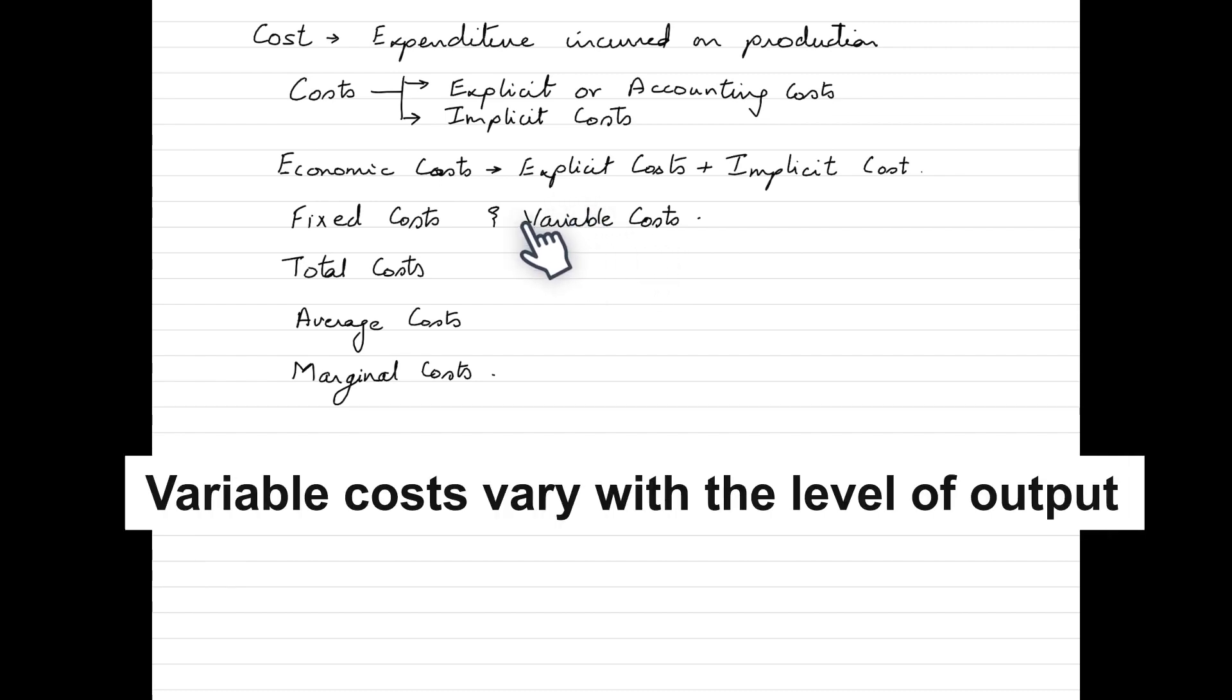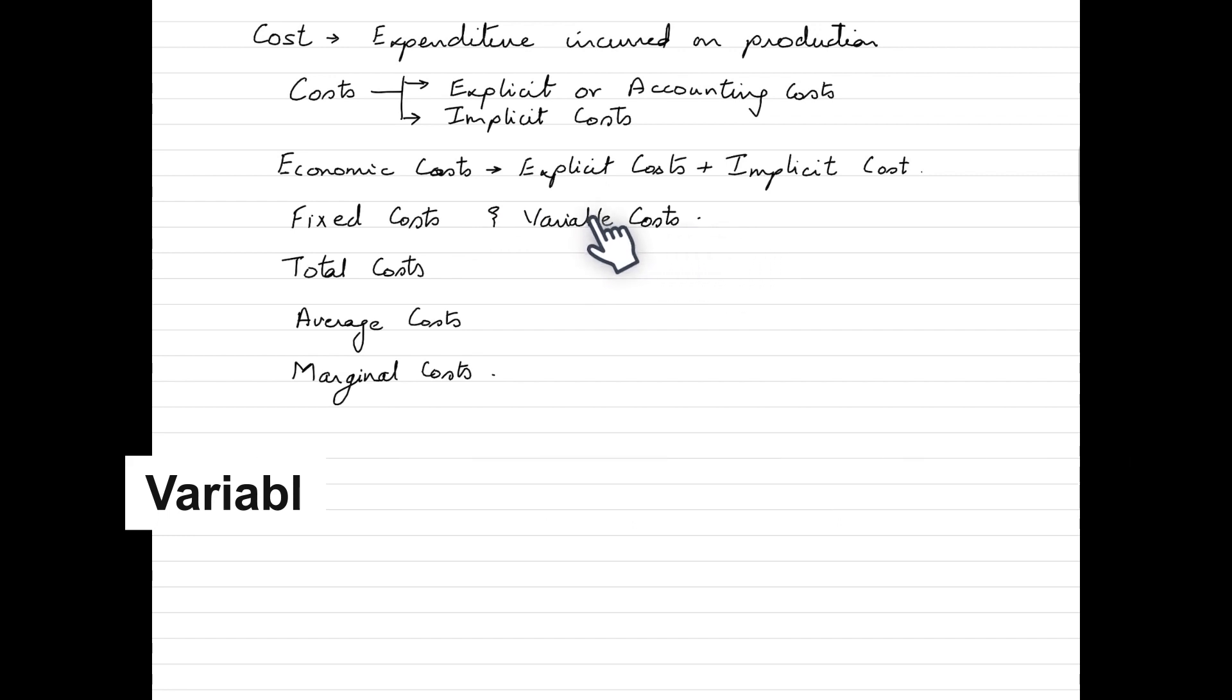Variable cost on the other hand, as the name indicates, varies with the level of output. If your output is rising or you are producing more, variable cost would also rise. If the production is going down, variable cost would also go down. Hence the name says that these are variable costs.